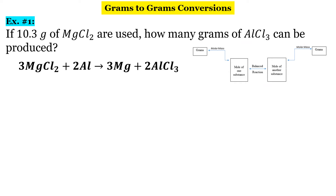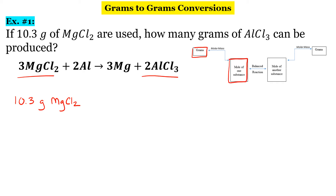To start the process off, we're going to start by writing out what we're given. In this case, we're given 10.3 grams of MgCl₂, magnesium chloride. So we're going from grams of magnesium chloride to grams of aluminum chloride. Looking at our flowchart, our first step is to go from grams to moles, and we're going to use the molar mass. So we need the molar mass of magnesium chloride.